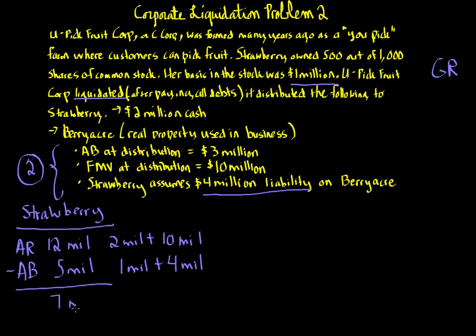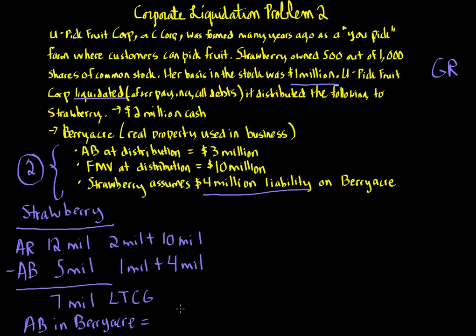Assuming the stock is held for more than a year, this is long-term capital gain because the stock is treated as capital. The adjusted basis Strawberry takes in Berry Acre always equals fair market value under section 334, so that's always $10 million. Even if the liability exceeds $10 million, we'll see that shortly.